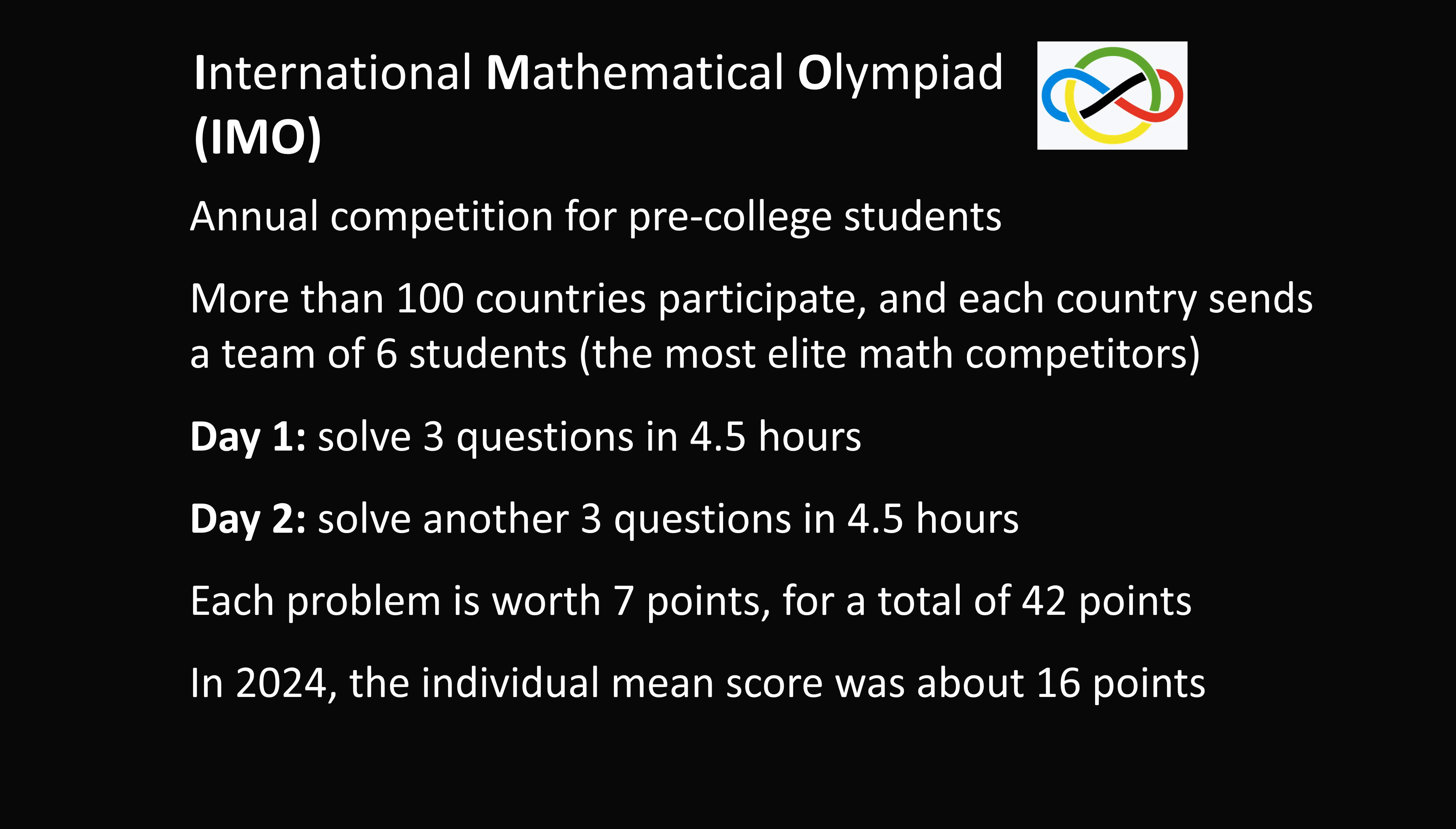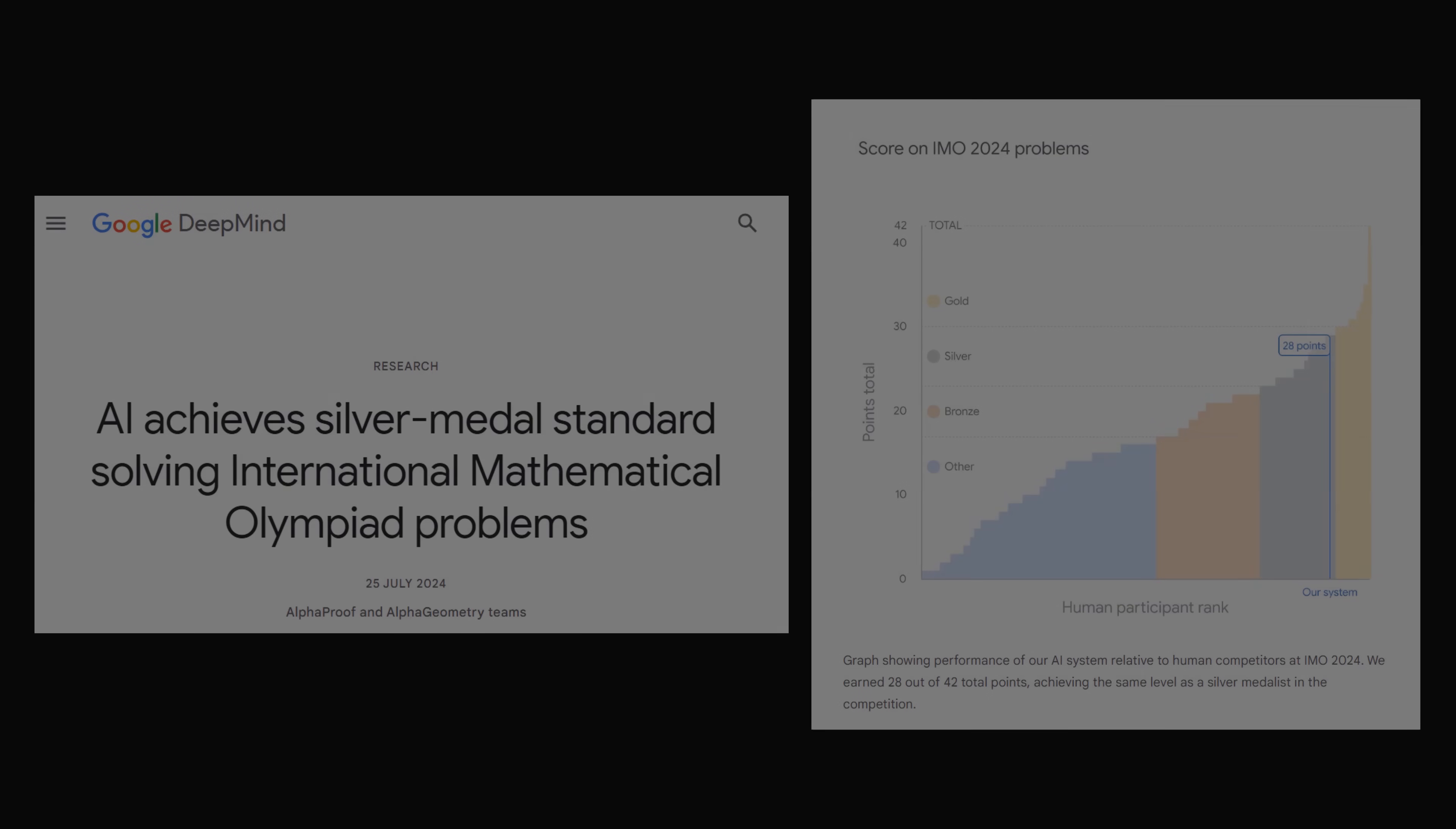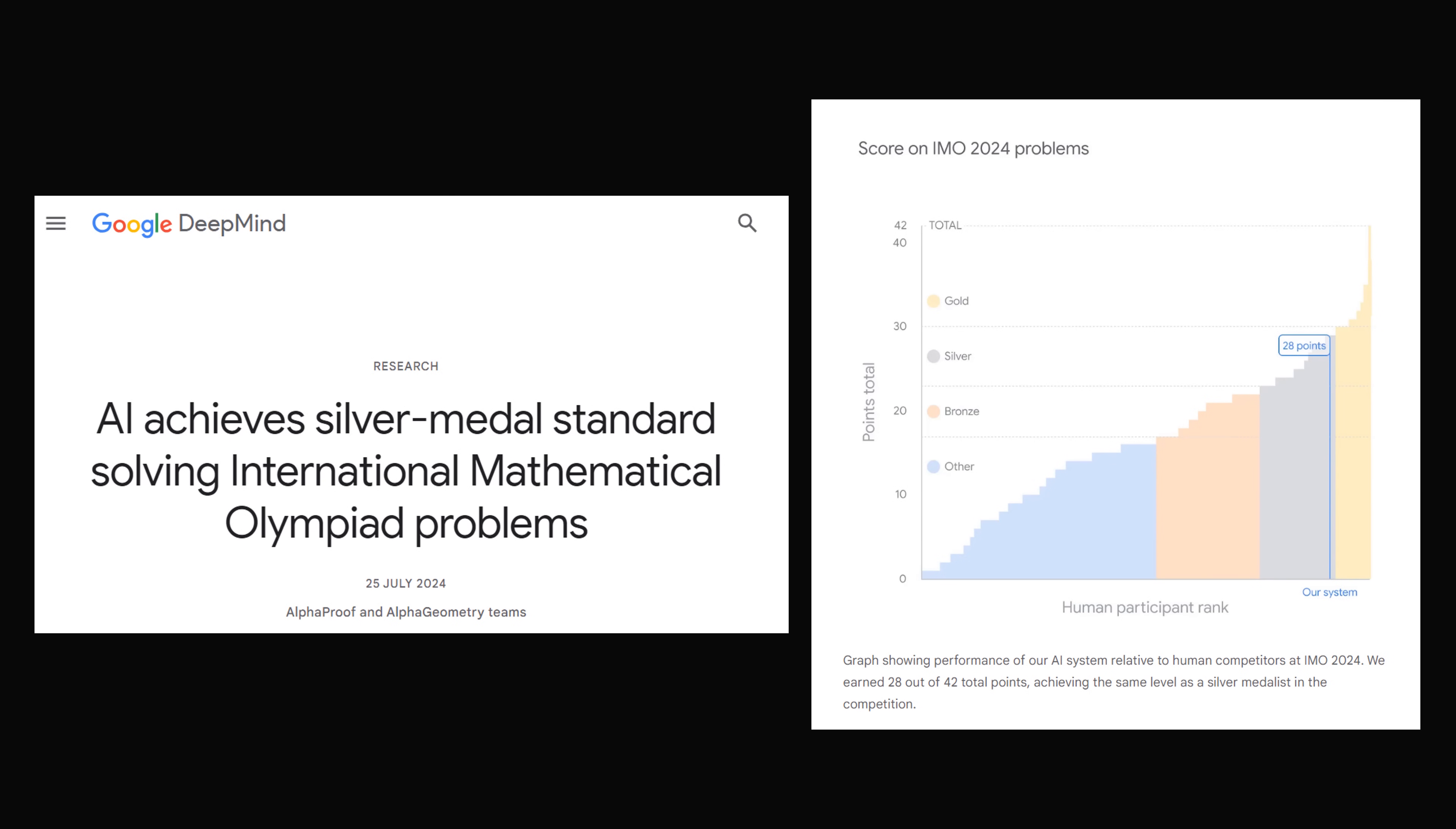Google's AI models scored a remarkable 28 points by solving four of six questions, a score equivalent to winning a silver medal.